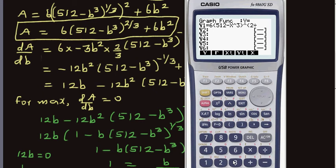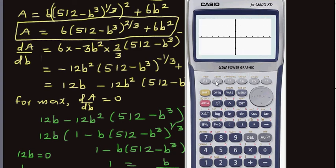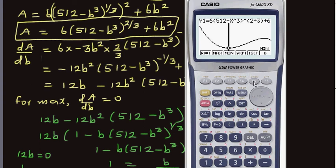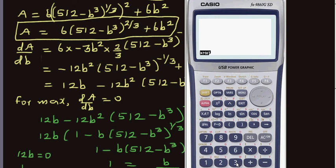Draw the graph, press zoom and auto. Using the graph solver for the minimum, when x = 0 (B = 0) you get the minimum area of 384. The maximum occurs at x = ∛256 ≈ 6.35, giving a maximum surface area of approximately 483 cm². Indeed, ∛256 = 6.349, confirming 6.35.